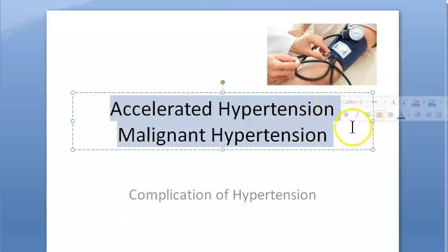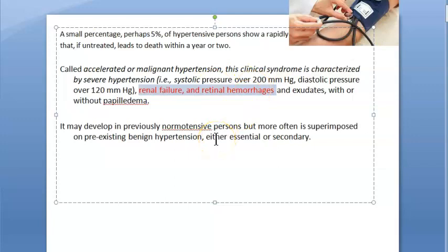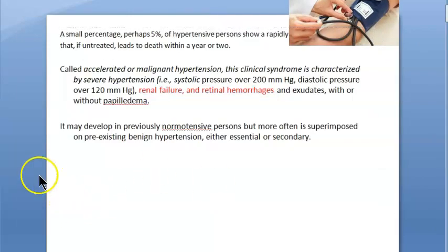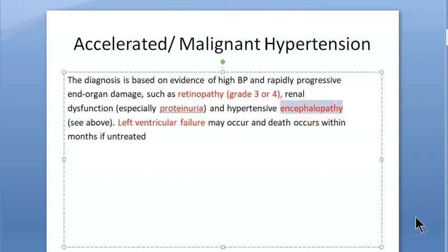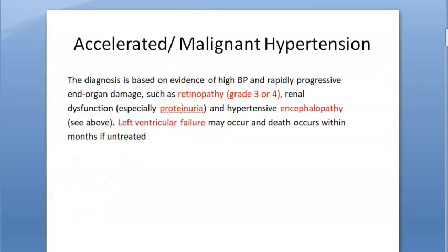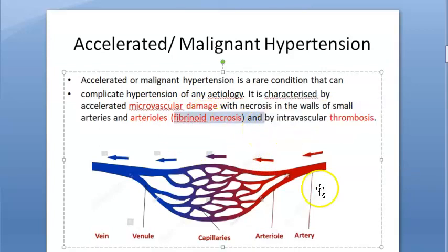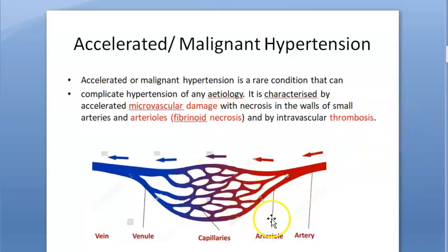To recap: accelerated hypertension and malignant hypertension are the same thing. This leads to renal failure and retinal hemorrhage, affecting mainly the kidney and eyes. It can also cause encephalopathy — so the three main targets are brain, eyes, and kidney. Left ventricular failure may also occur. The underlying problem is damage to the arterioles, with fibrinoid necrosis in arterioles causing microvascular damage and thrombosis.